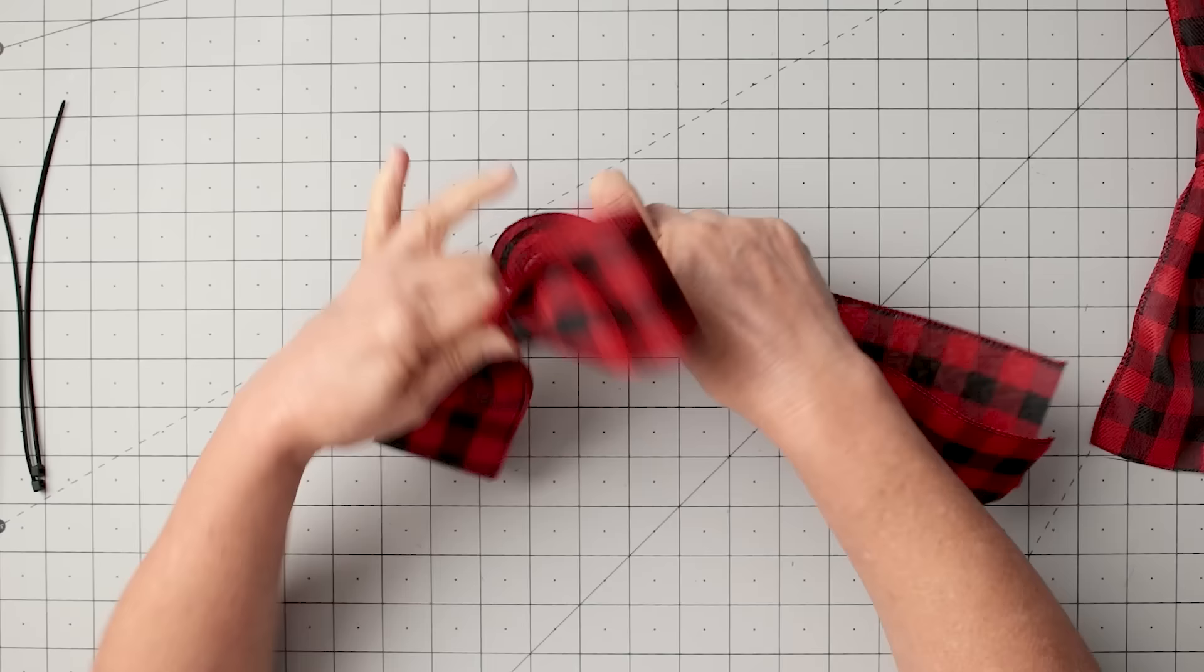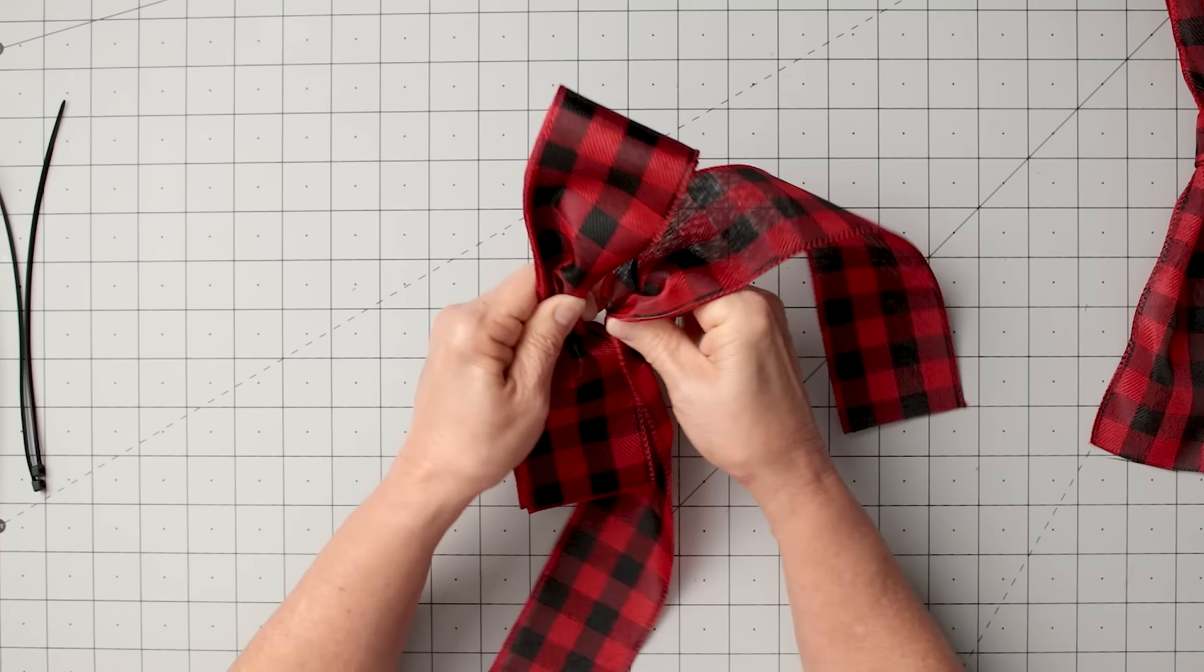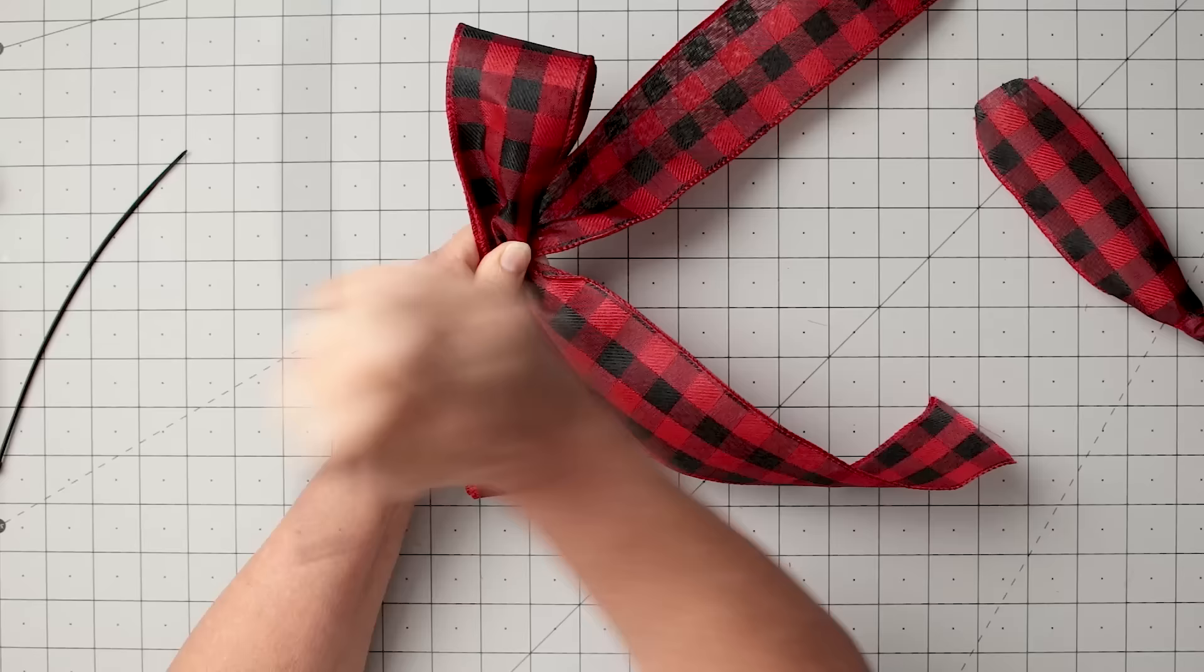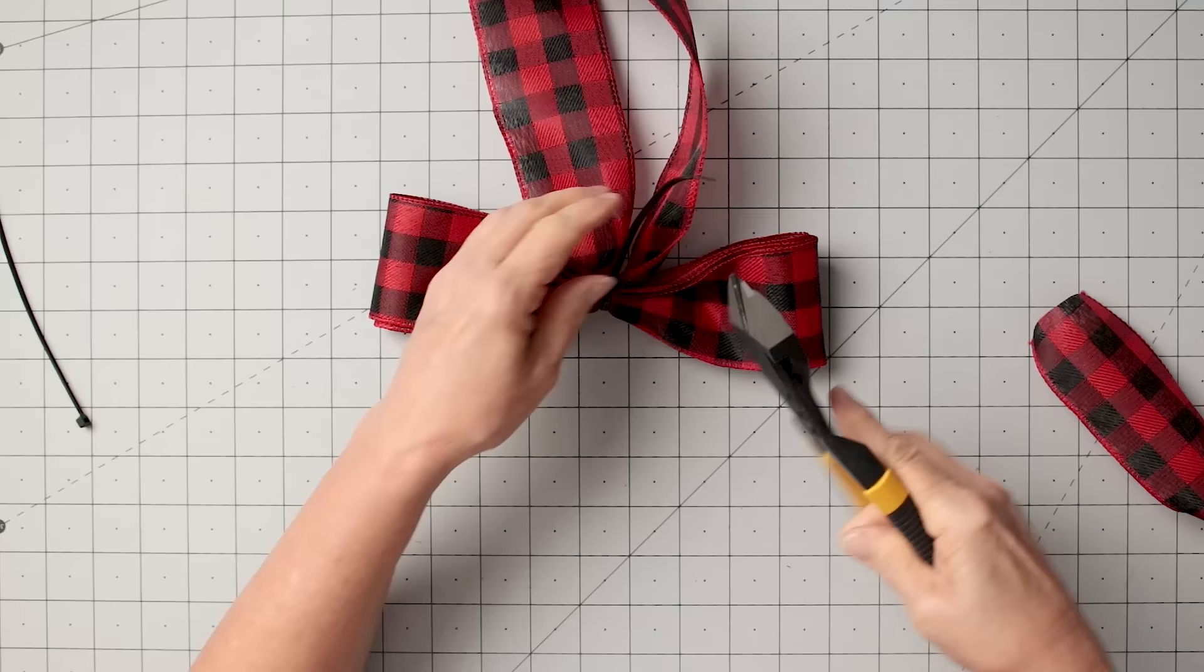Once you do that, you can add your little streamer there, kind of find the center of the streamer, and then just grab a zip tie and zip tie it right together. It's that simple.